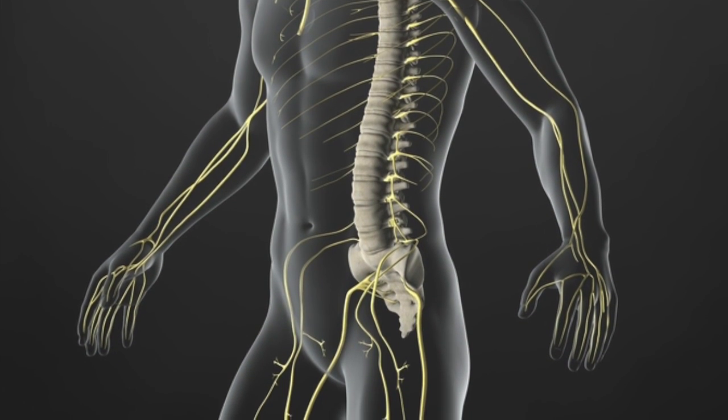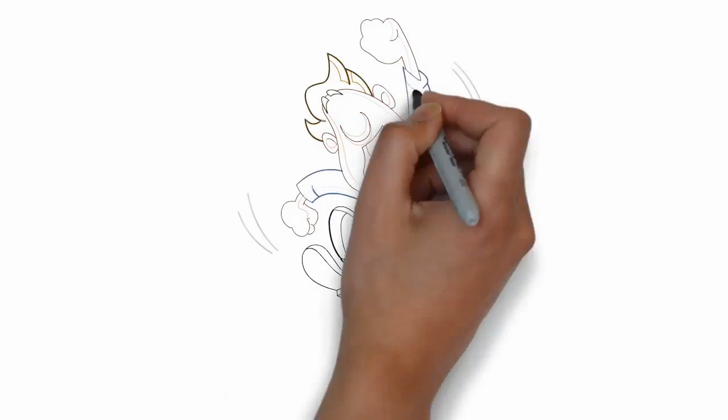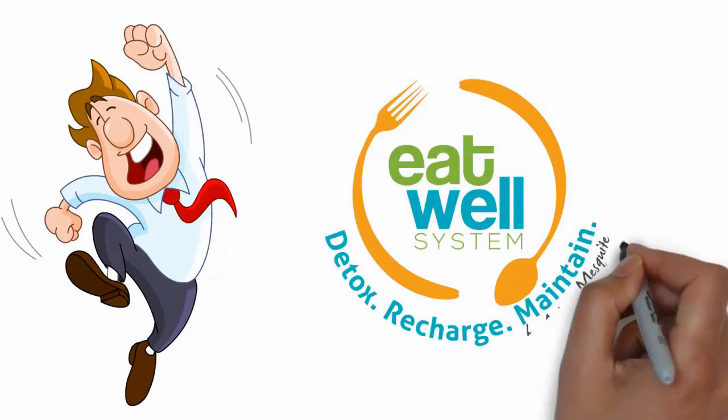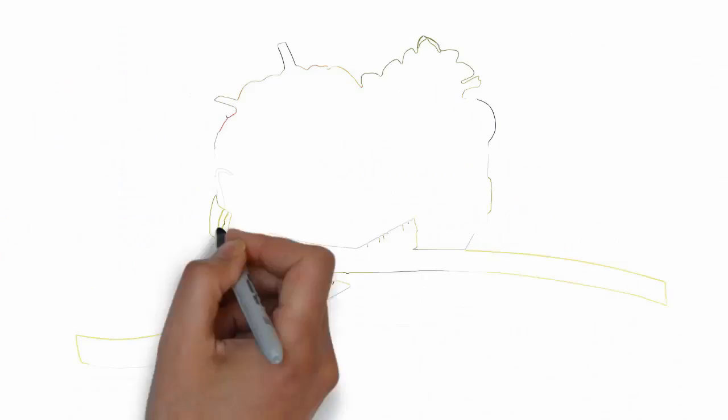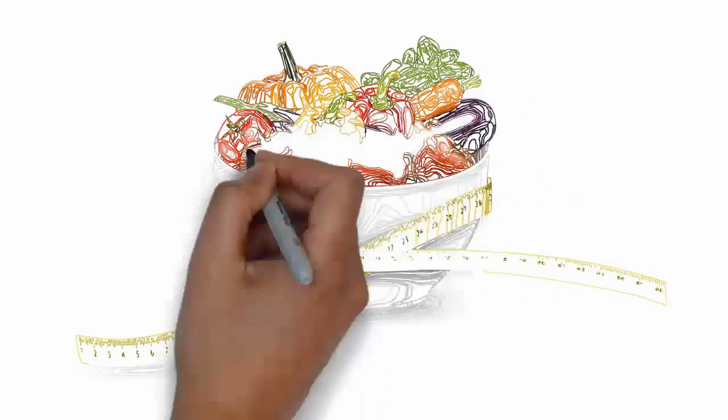Feel better, have more energy, obtain deeper sleep and better digestion with Mesquite's nutritional programs: Eat Well System and Thyroid Rehab. With Eat Well System, our goal is to get you healthy first before you focus on weight loss.